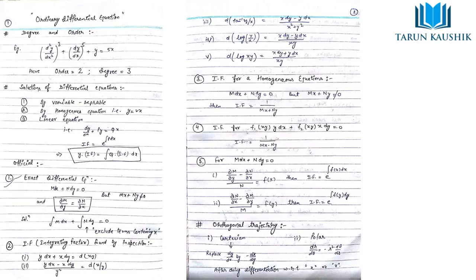A differential equation is a combination of derivatives — first derivative, second derivative, third, fourth, or any order of differentiation — in the form of an equation, meaning there will be an equals sign. So the degree and order are important terms to understand.